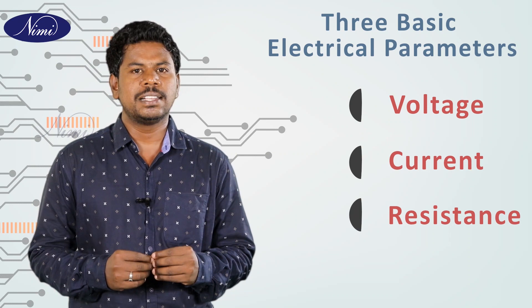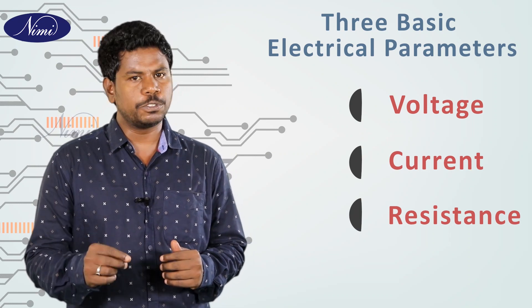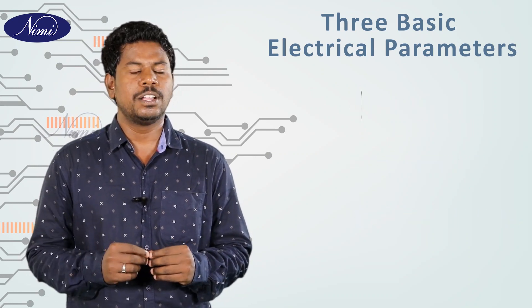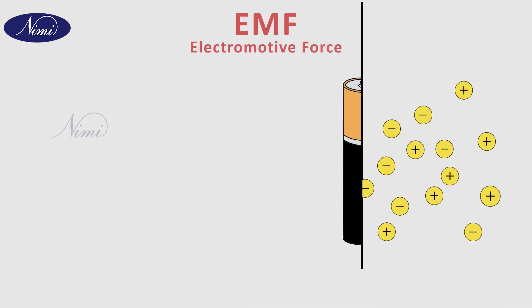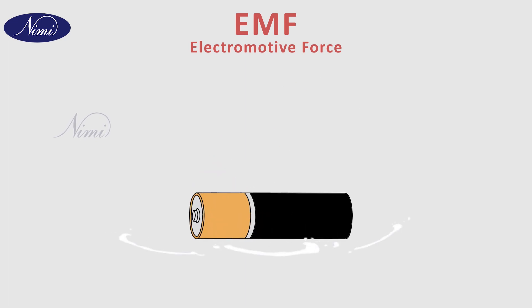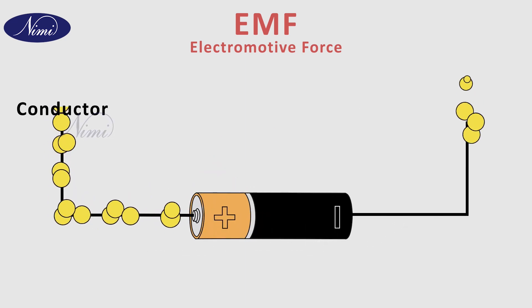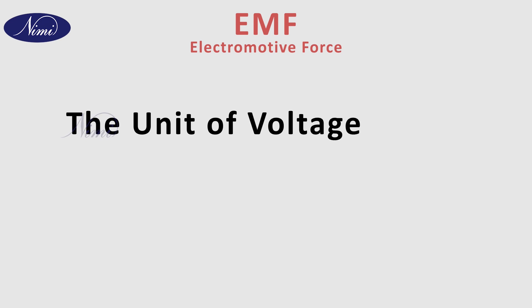What is voltage? Simply voltage is a force or pressure or potential difference. Voltage is also known as EMF, electromotive force. The force which is required for electron movement in a conductor. The unit of voltage is volt and it is denoted by a letter V.